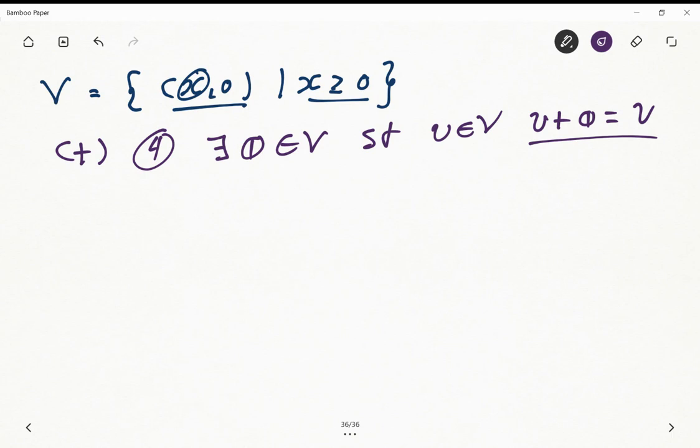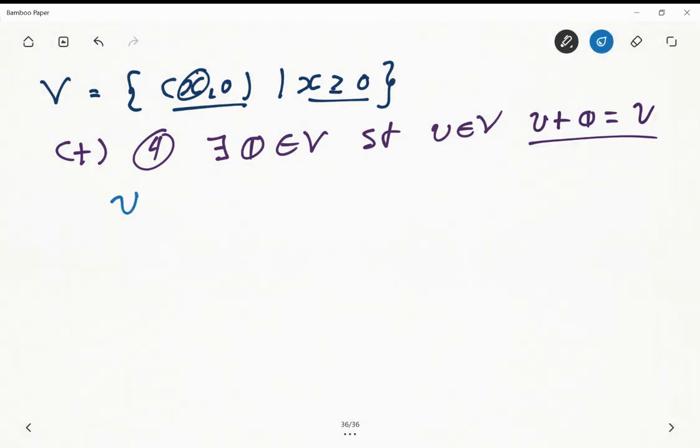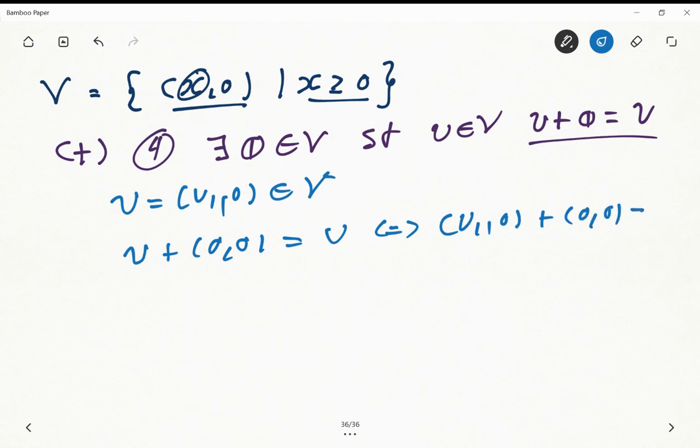In this case, it is trivial that given a generic vector u equals to (u1, 0), this is part of V, then u plus the (0, 0) vector returns u because this is equivalent to having (u1, 0) plus (0, 0), and this is just (u1, 0).